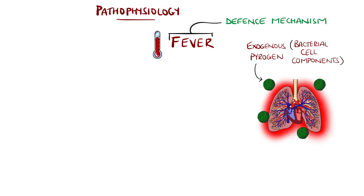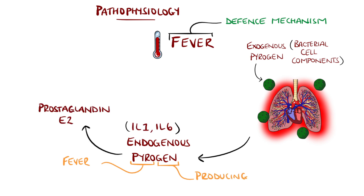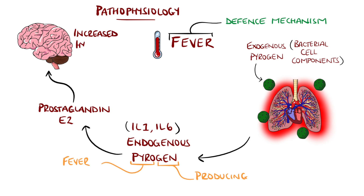There are exogenous pyrogens, like bacterial cell components, that cause the release of endogenous pyrogens, such as interleukin-1 or 6, that ultimately lead to the release of molecules like prostaglandin E2, which then binds to the hypothalamic thermoregulatory centres, causing an increase in temperature.